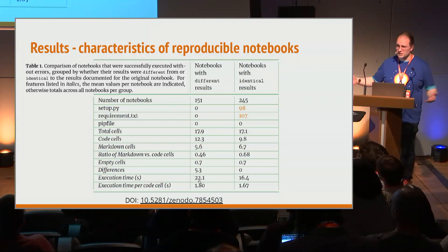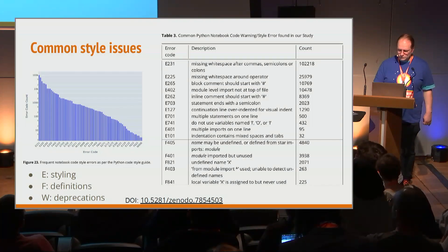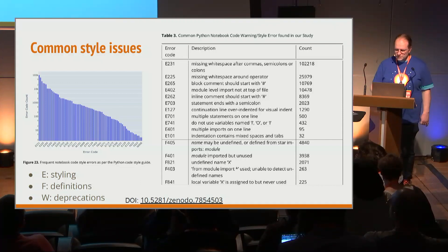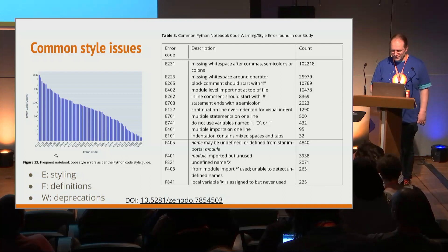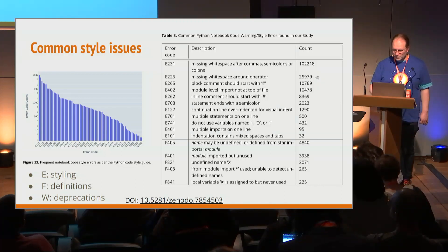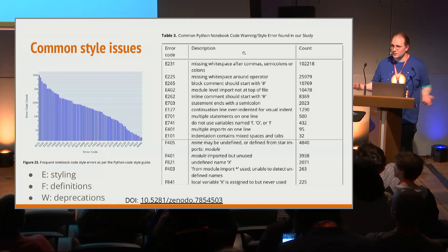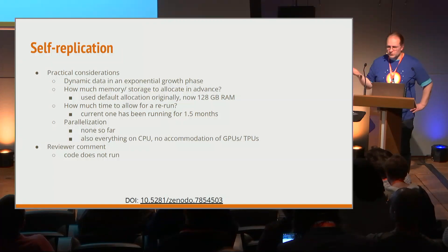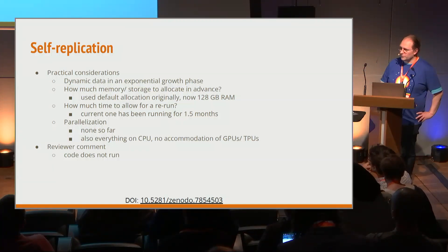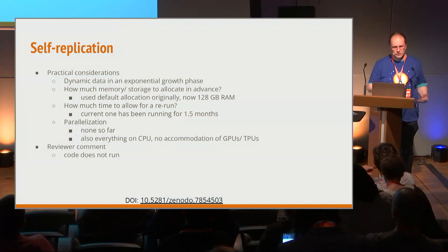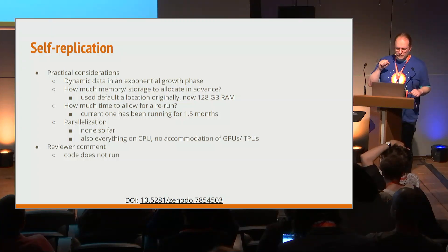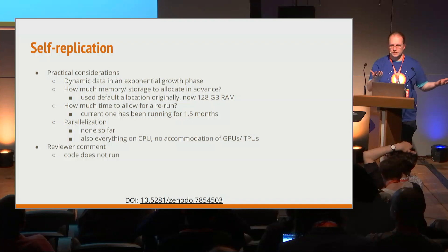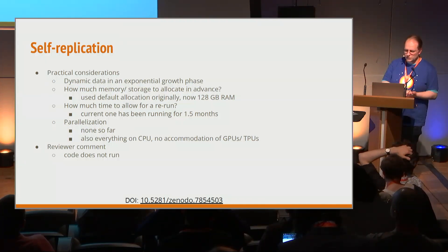Apart from errors, we also looked at stylistic things. E errors are for styling, F is definitions, and W is deprecations — all appearing in the hundreds of thousands. Some are just white space. But Python is a language that actually cares about white space. We sent this to a journal, and in doing so had to think about self-replication. The way we replicated it wasn't easily transferable or shareable. The first comment we got from the reviewers was: sorry, can't reproduce it. We tried to be transparent, and the reviewer actually kind of confirmed our results.